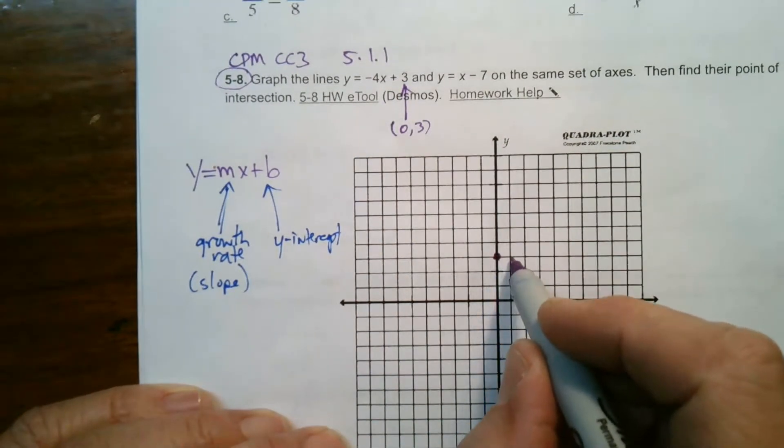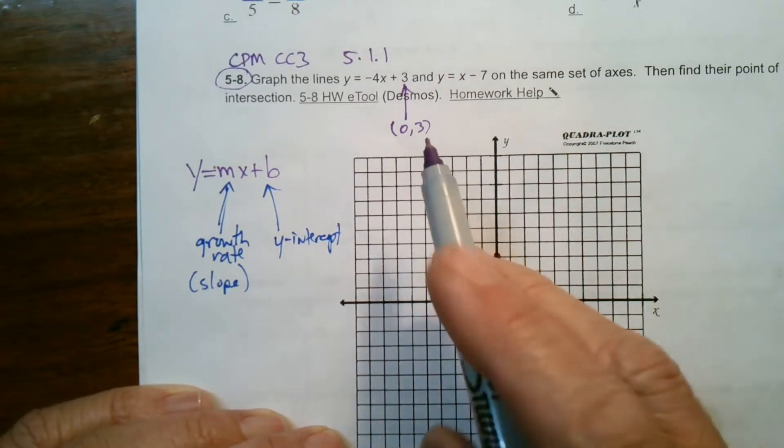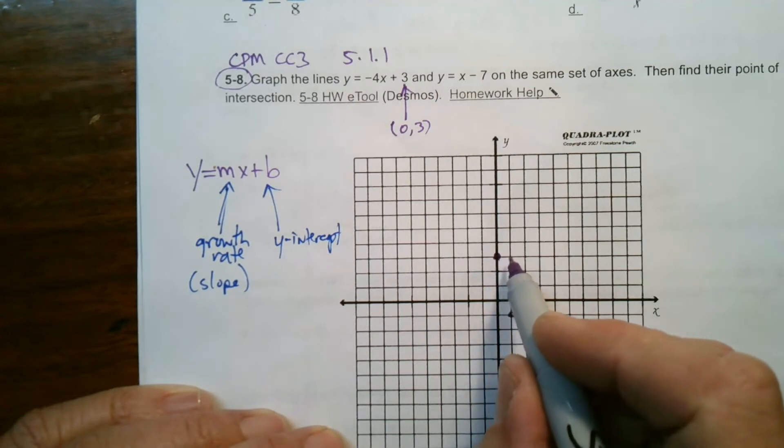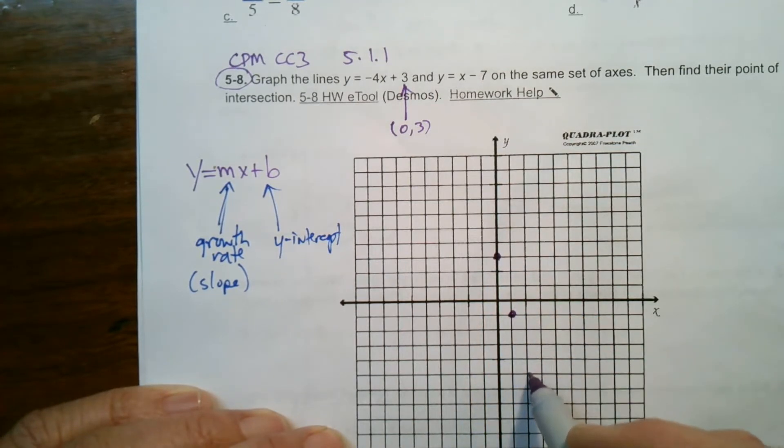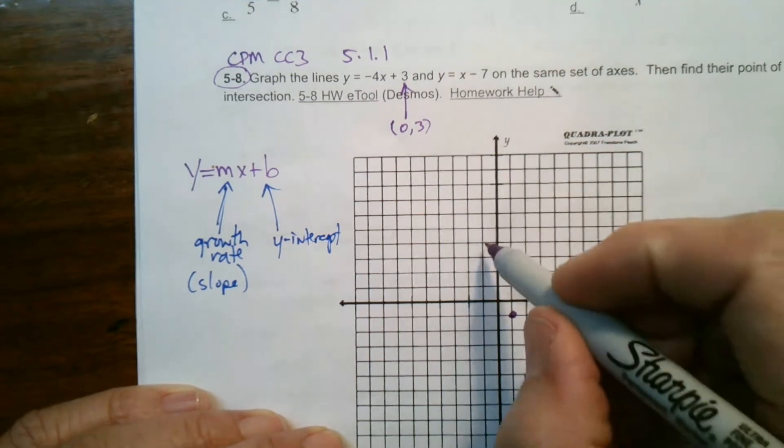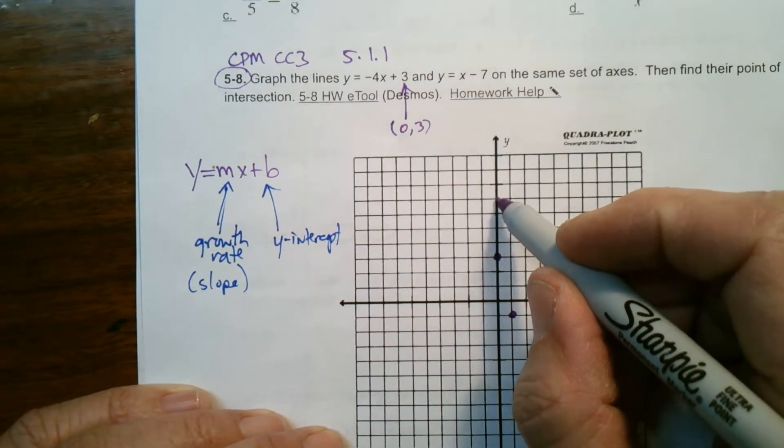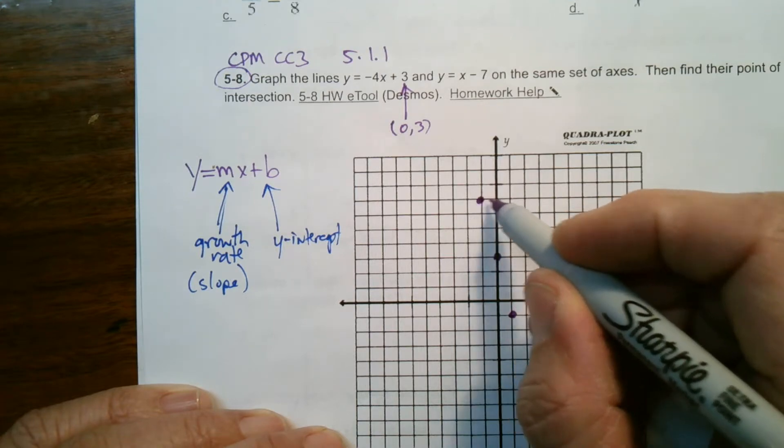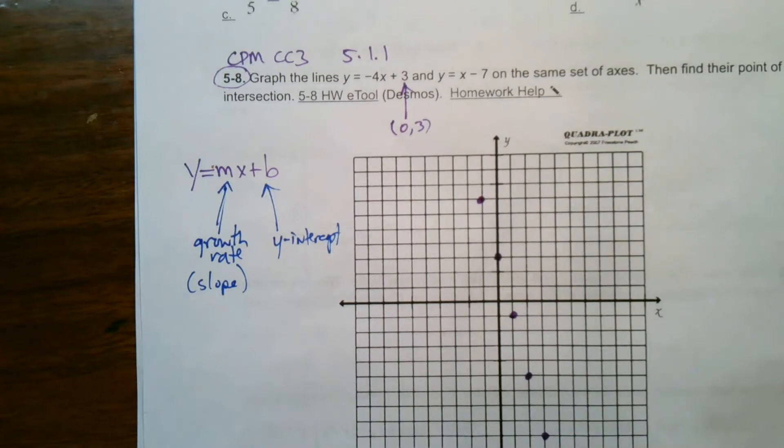That means every time I go over 1, I go down 4. If I have a negative 4 as my slope, every time I go over 1, I go down 4. So, over 1, down 4. Over 1, down 4. And then if I want to add some points this direction, it's the same. But in this case, I'm going to go backwards. So, I'm going to go up 4 over 1. Because if I were going backwards, it'd be up 4 over 1.